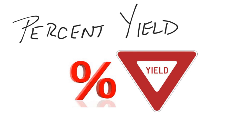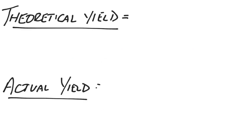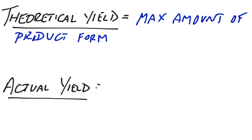When we're talking about percent yield, we have to actually discuss two other terms. The theoretical yield and the actual yield. The theoretical yield is the maximum amount of product that can form from a certain amount of reactants. So, from the available reactants.